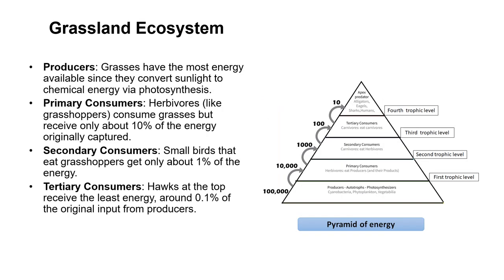In the grassland ecosystem example, grasses capture energy from the sun via photosynthesis. Herbivores like grasshoppers receive 10% of that energy. From producers, only 10% goes to primary consumers, only 1% to secondary consumers, and only 0.1% goes to tertiary consumers. So at every trophic level there is a 90% energy loss.